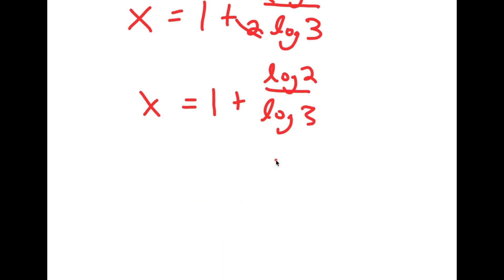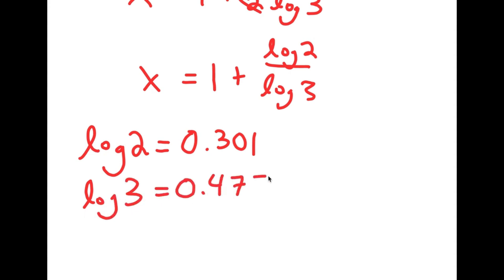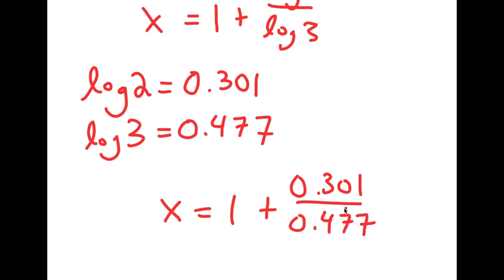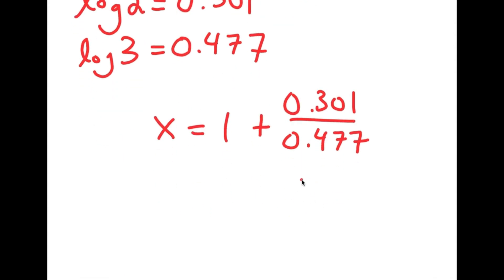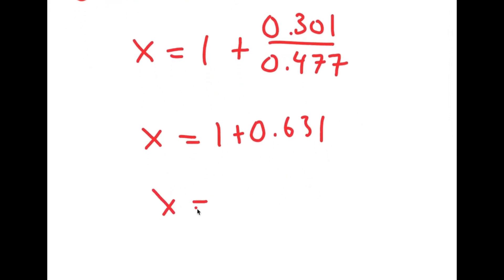Now, log 2 is equal to 0.301 and log 3 is equal to 0.477. So I just plug these back into our equation. I get x is equal to 1 plus 0.301 over 0.477. And 0.301 over 0.477 is 0.631. So 1 plus 0.631 is 1.631. So this is my answer.